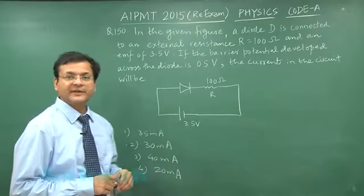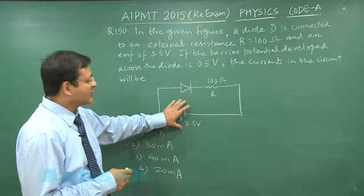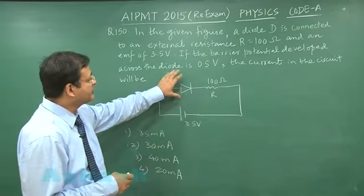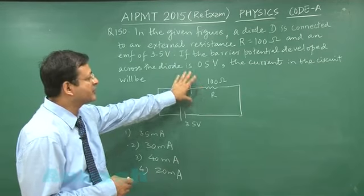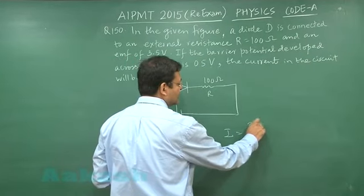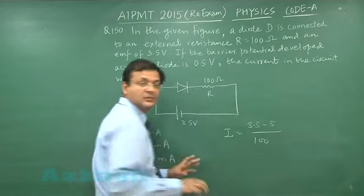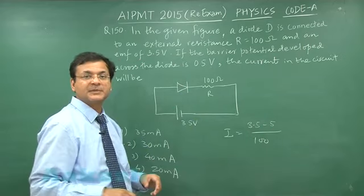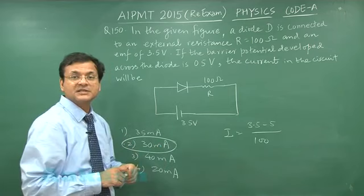Next question, question 150, is simply based on the formula V equals IR. Here you see 3.5 volts has been applied but 0.5 volt is dropping across this diode. So the effective voltage drop across this 100 ohm resistance is simply 3.5 minus 0.5, and the total resistance given is 100 ohm. You have to calculate the current in this particular question, which will be straightforward: 30 milliampere. That is the answer to question 150.